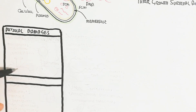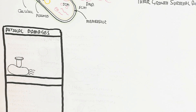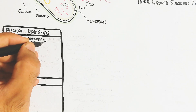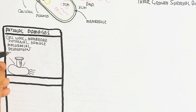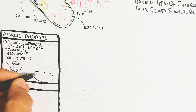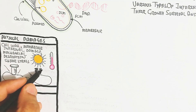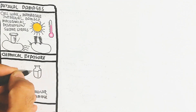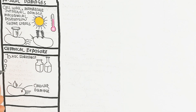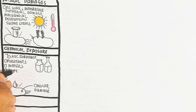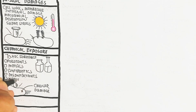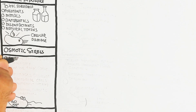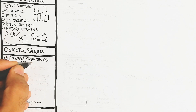Physical damage is due to light, heat, and mechanical stress — the cell wall, membrane, and internal components can be damaged by mechanical disruption and shear stress. Chemical exposure of bacteria leads to death due to cellular damage. Toxic substances include pollutants, metals, antibiotics, and disinfectants, as well as natural toxins.